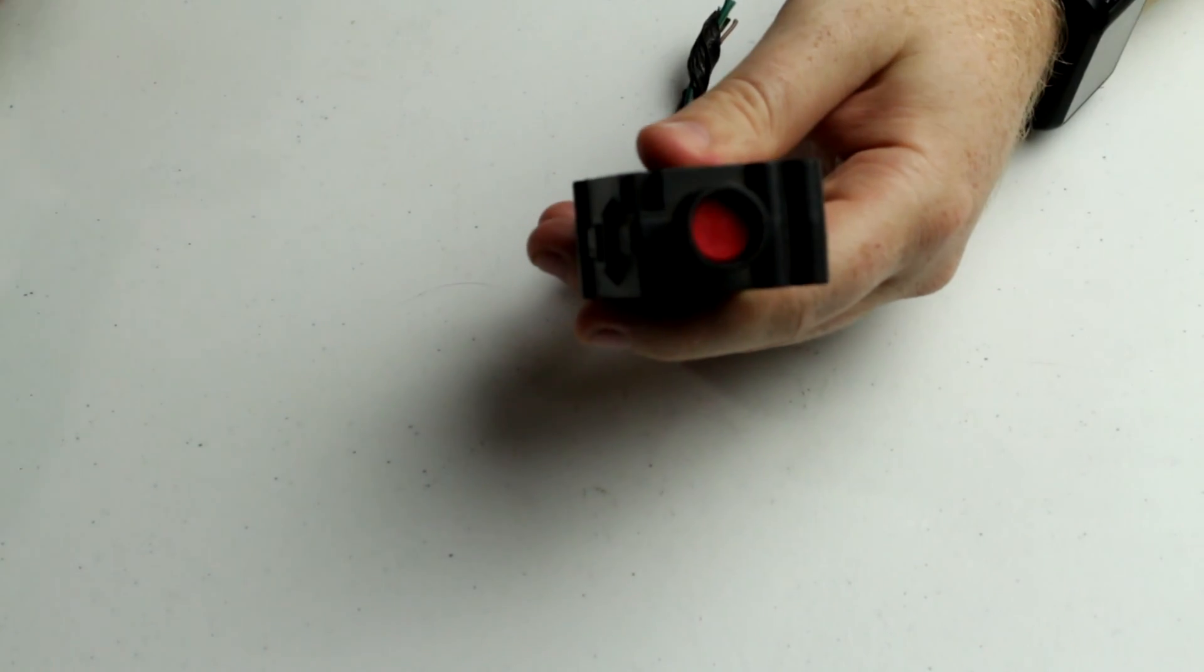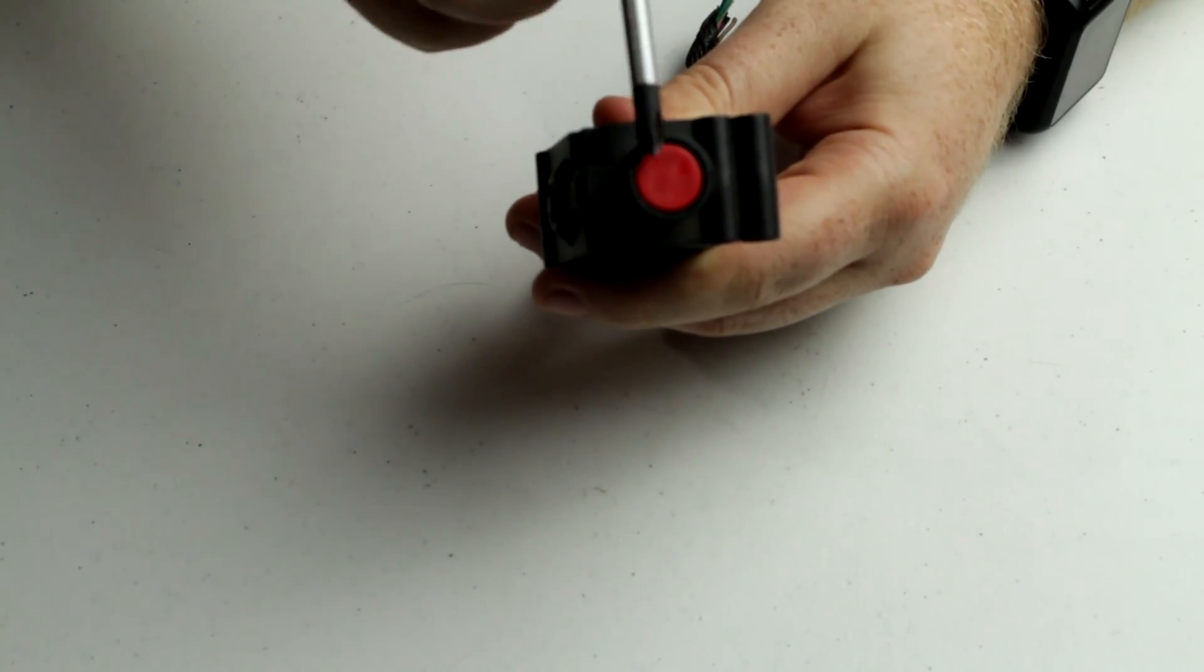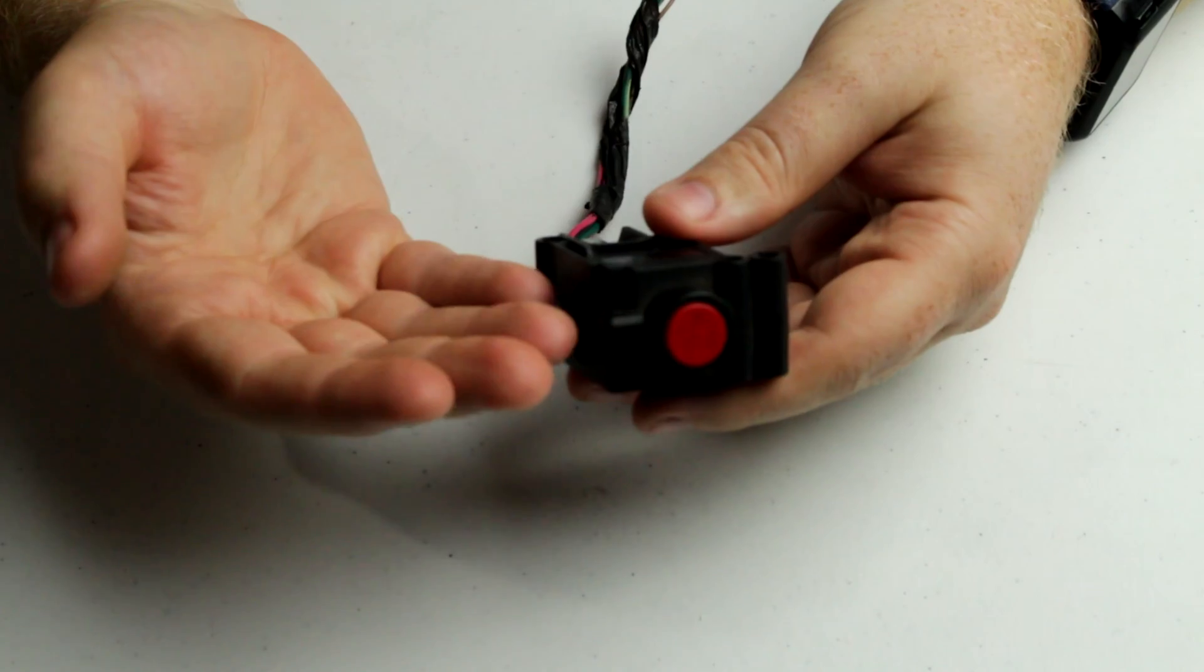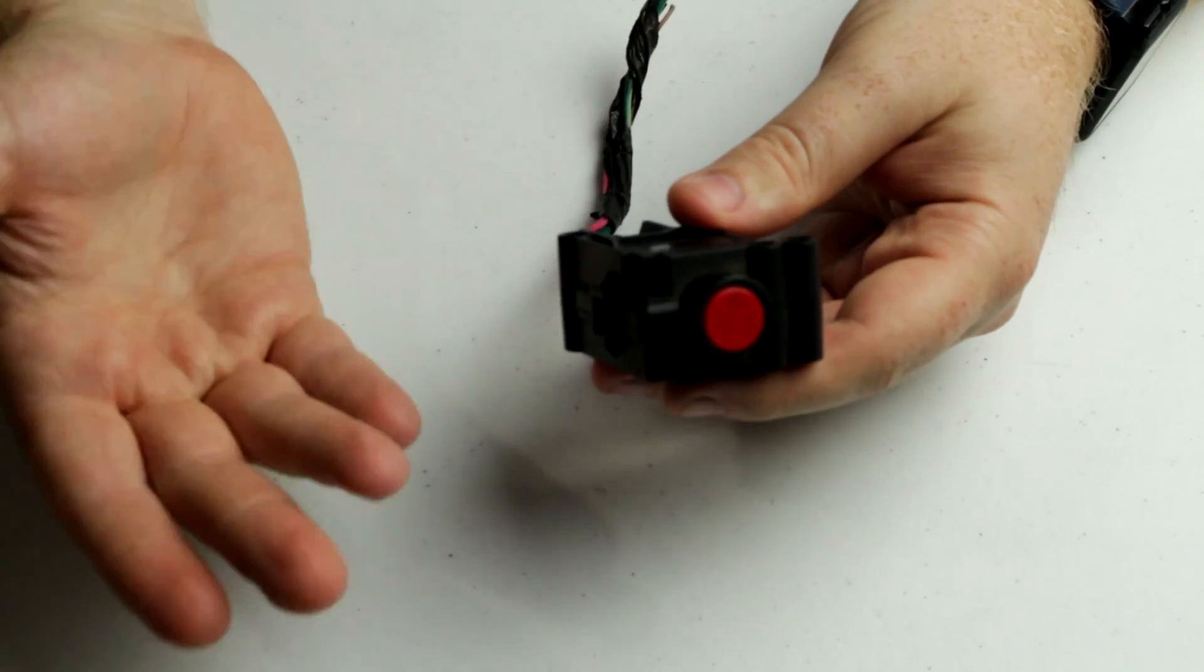So when your car gets hit the switch activates and now this button is in the up position. Not all of them are designed this way. Some of them are self-resetting and some of them are one-time use.